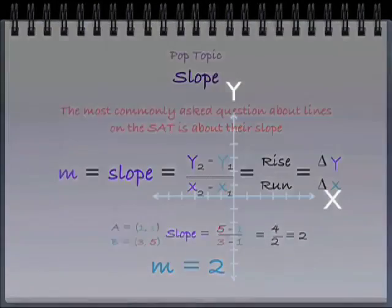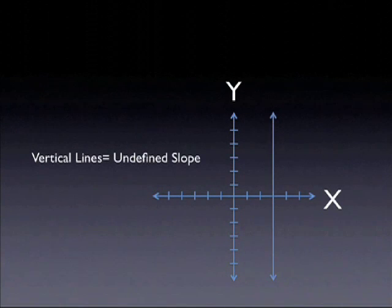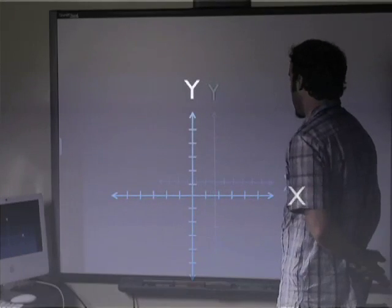Important things to know about slopes: first of all, vertical lines have an undefined slope. Horizontal lines, on the other hand, have a zero slope.